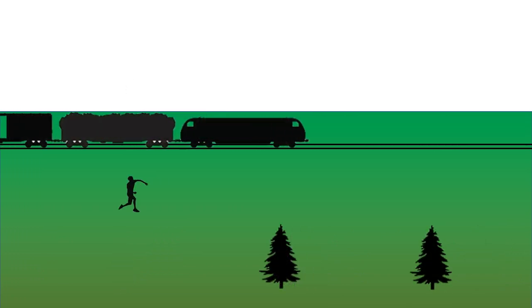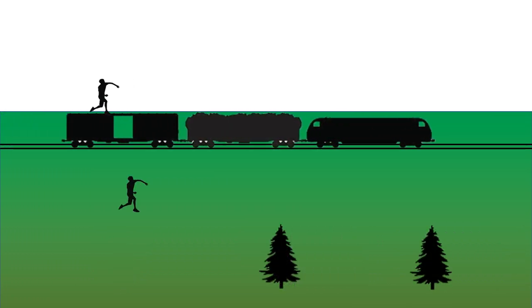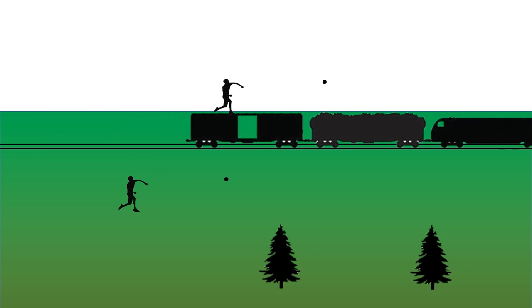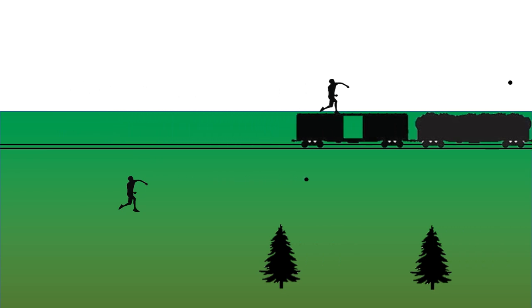But here's the thing. An observer on the ground, standing still, will clock the speed of that ball at 150 miles an hour. The ball got a push from the train.